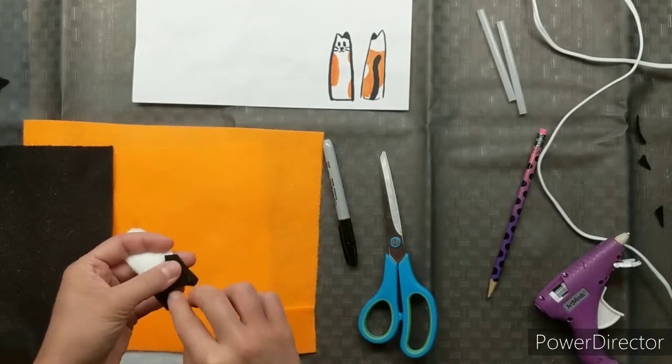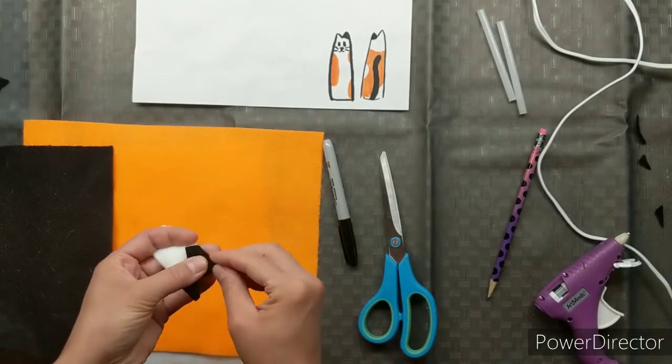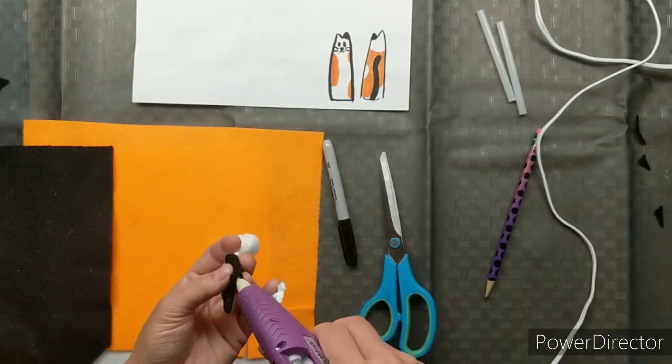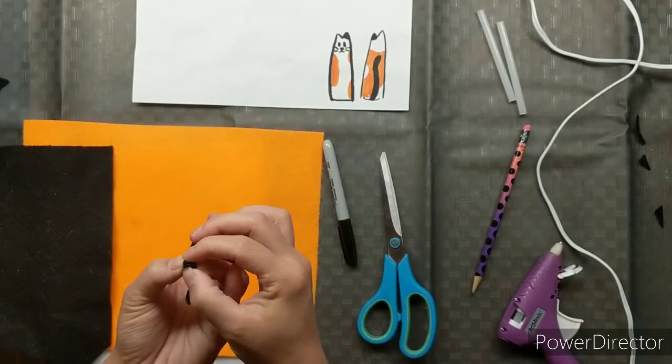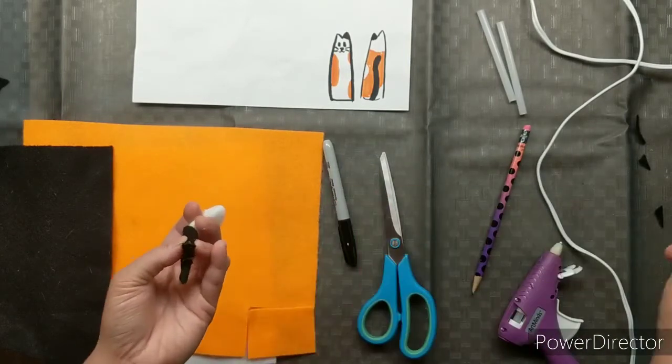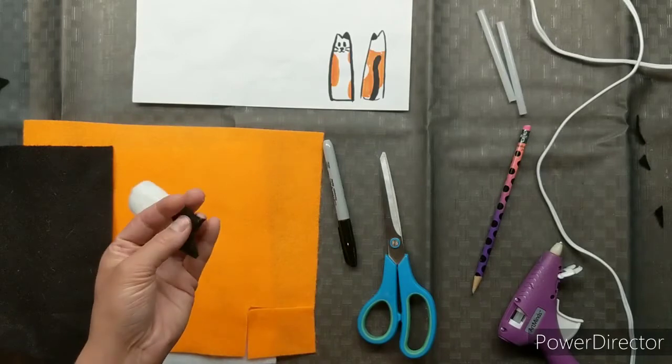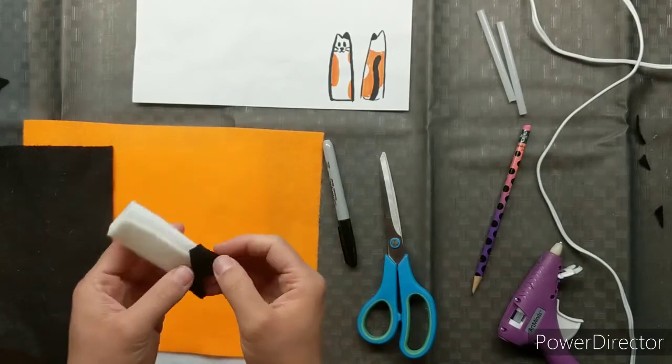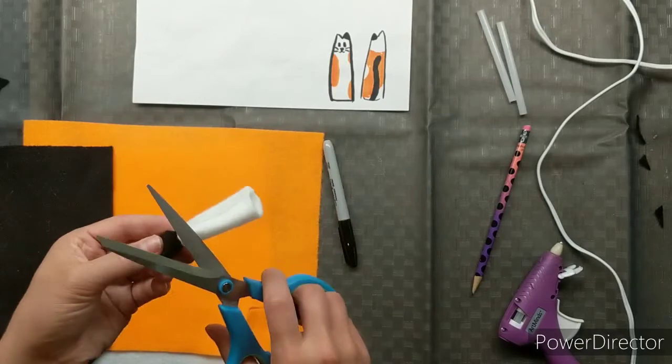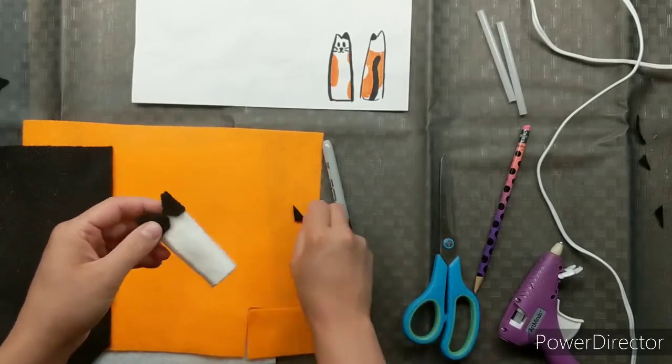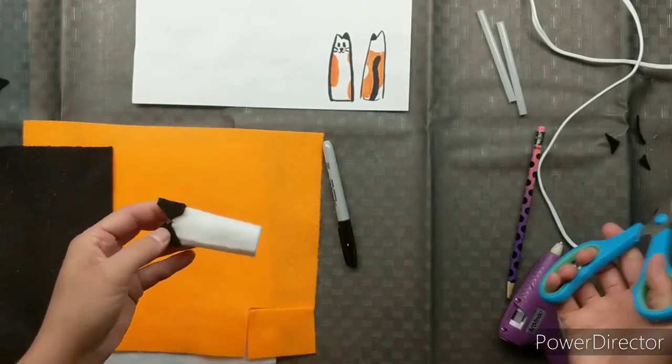At the very tip of the ear it's not coming to a complete point, so I'm adding a little bit of glue and then I'm pinching it so that it looks pointy from the front. I'm very carefully trimming off the excess to get the shape that I want.